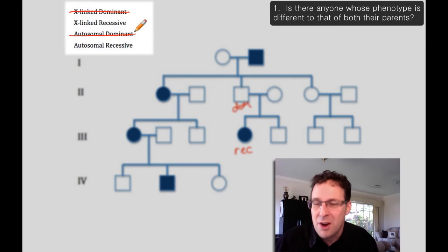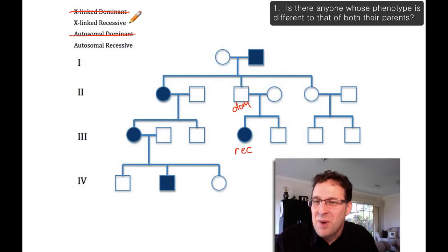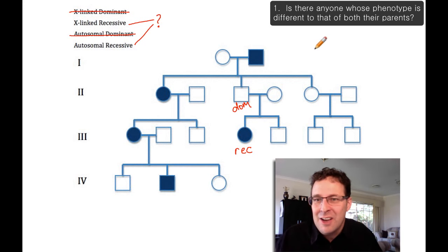So we've just narrowed the field by 50% just by asking that simple question. That still leaves us with X-linked recessive and autosomal recessive as possible modes of inheritance. So how do we tell whether this is X-linked or autosomal?